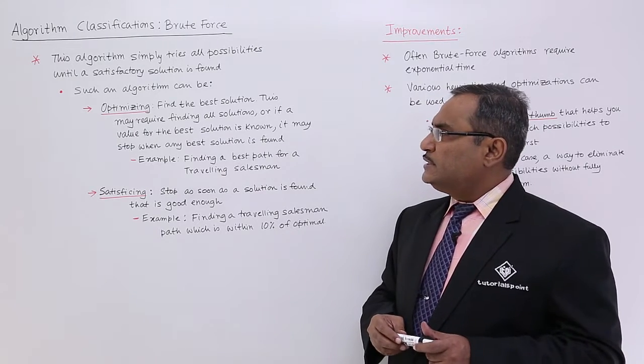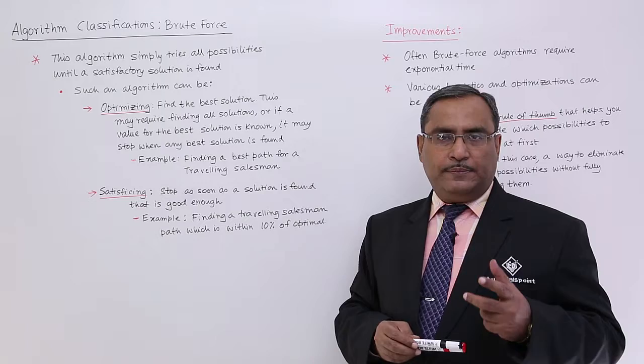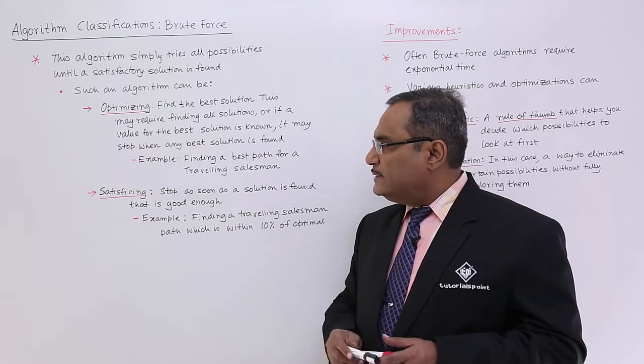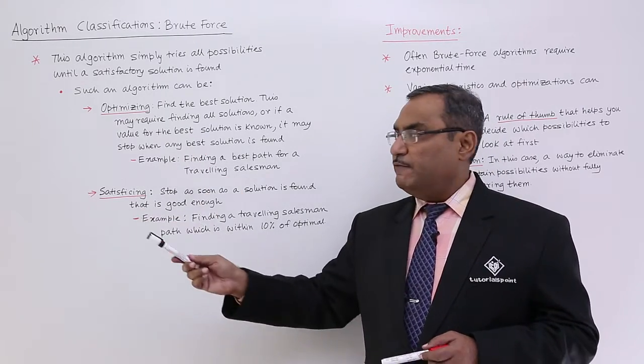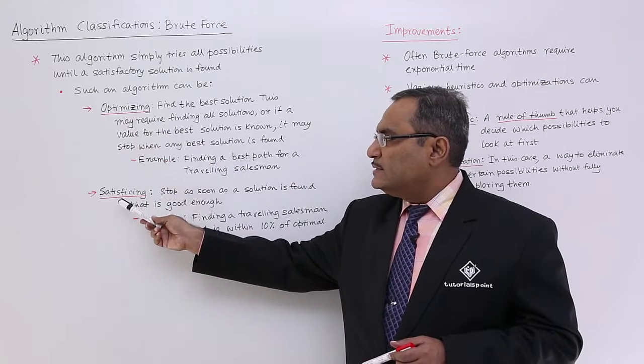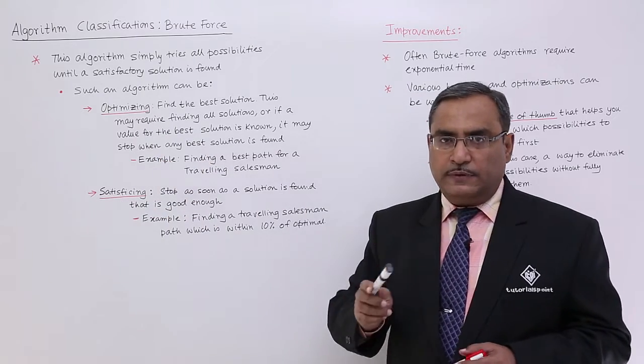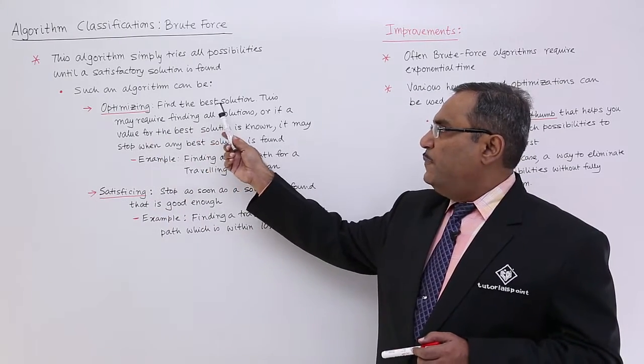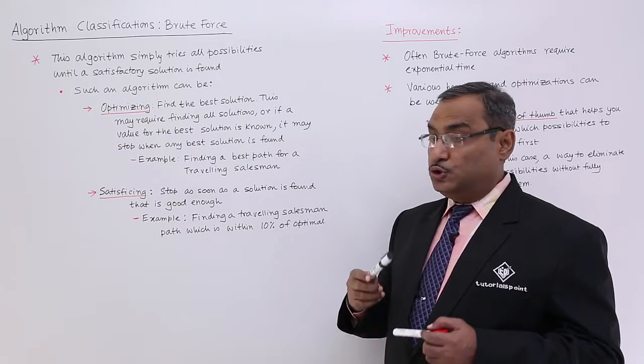There is a main theme. Such an algorithm can be of two types: one is optimizing, another one is satisficing. So optimizing and satisficing, two types of cases are there.